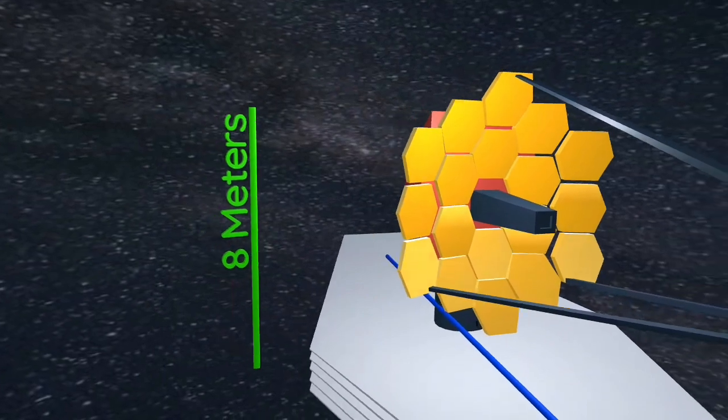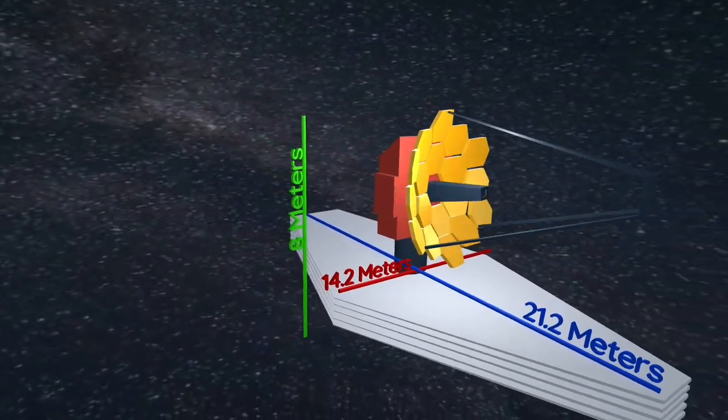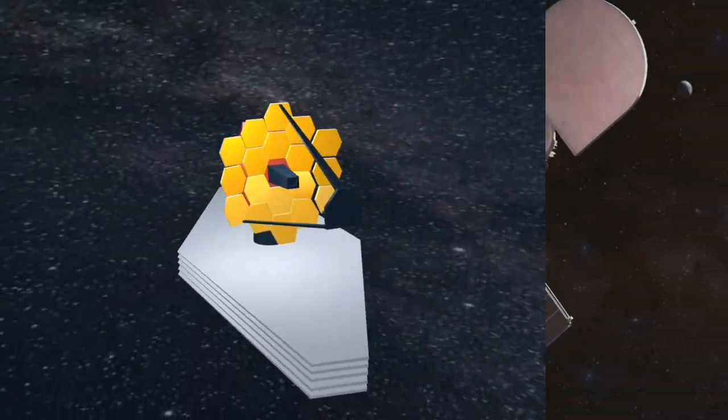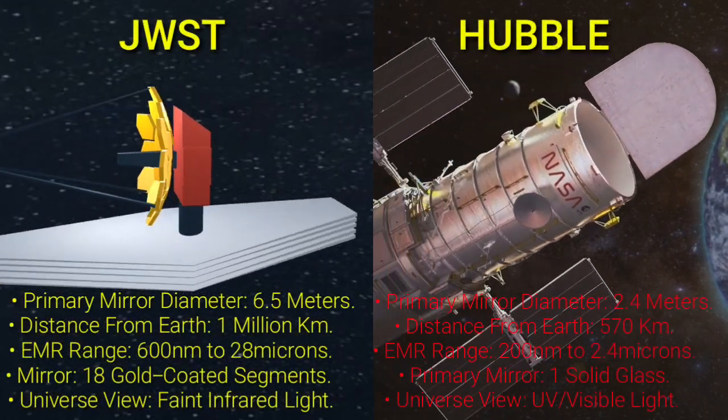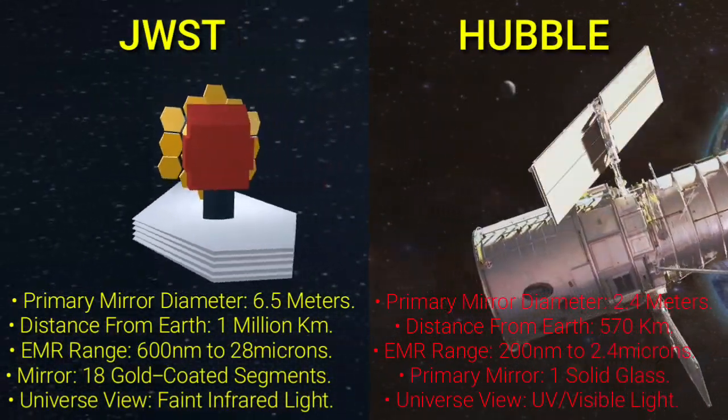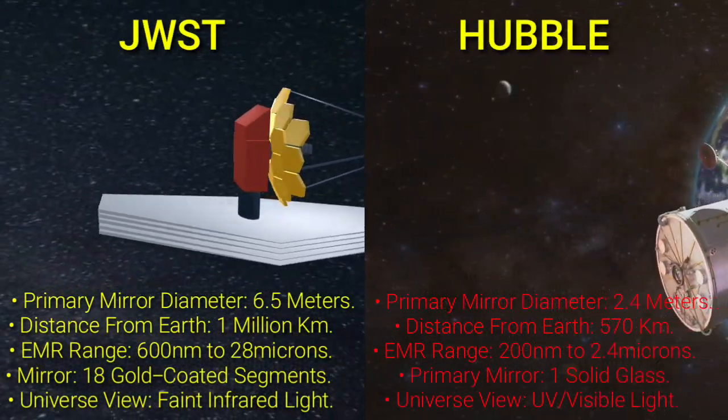The James Webb Space Telescope is the world's largest, most advanced space telescope ever made. As compared to the good old Hubble telescope, the James Webb Space Telescope is 100 times more powerful and is capable of seeing the universe in infrared light.